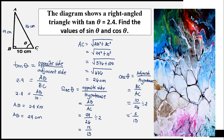So cosine theta is equal to 5 over 13, and sine theta is equal to 12 over 13, and tangent theta is equal to 24 over 10. Thank you for watching. God bless.